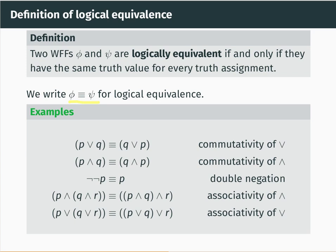Here are some example well-formed formulas that are logically equivalent. P or Q and Q or P are logically equivalent, because the only truth assignment which makes P or Q false is the one which makes both P and Q false — for every other truth assignment, P or Q is true. Similarly, the only truth assignment which makes Q or P false is when P and Q are both false. So exactly the same truth assignments make each formula true, meaning they're logically equivalent — they have the same truth value for every possible truth assignment to P and Q.